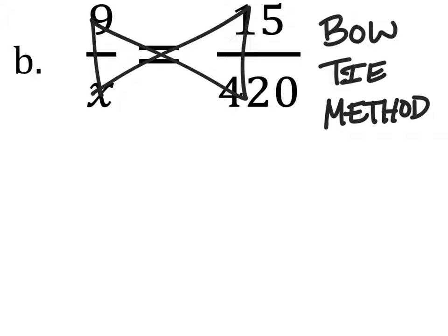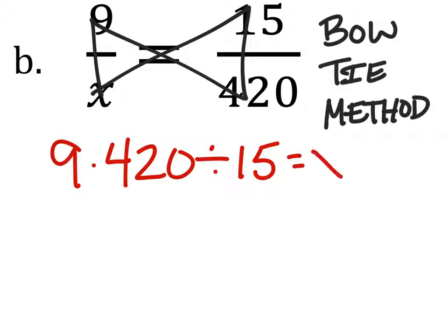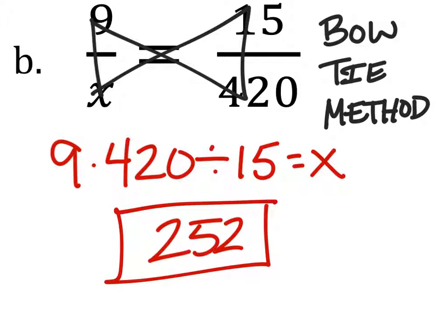But what this means is you do 9 times 420 divided by 15. This is just the fishing method, we call it something different, and that's okay. When I do this in the calculator, I get 252.